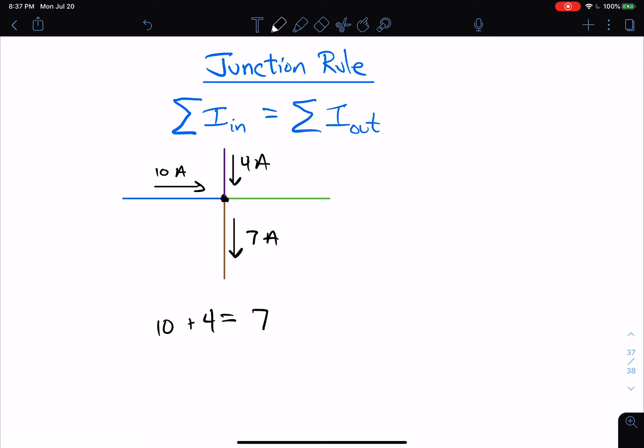Now I can do this math in my head. I can see that 10 plus four is more than seven. So that means there must be, we'll call it IG for the green wire. There must be some more leaving. 10 plus four is 14. This is seven plus IG. And so hopefully you can see that this means that the green current must be seven amps. And that's all there is to it.